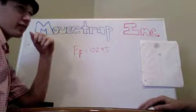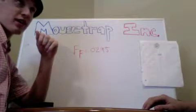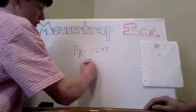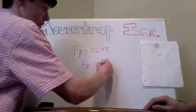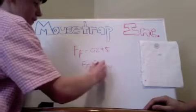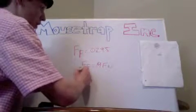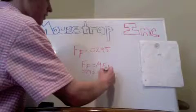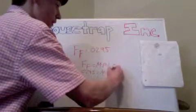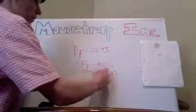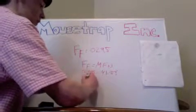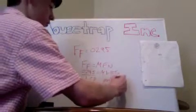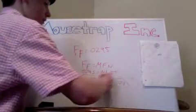Now that we've got our force of friction value, we're going to show you how to calculate the coefficient of friction using the equation Ff equals μFn. We already know both Ff and Fn, so we plug those in: 0.0295 equals μ times 1.23. Dividing 0.0295 by 1.23, we get that the coefficient of friction μ is 0.024. And there you have it.